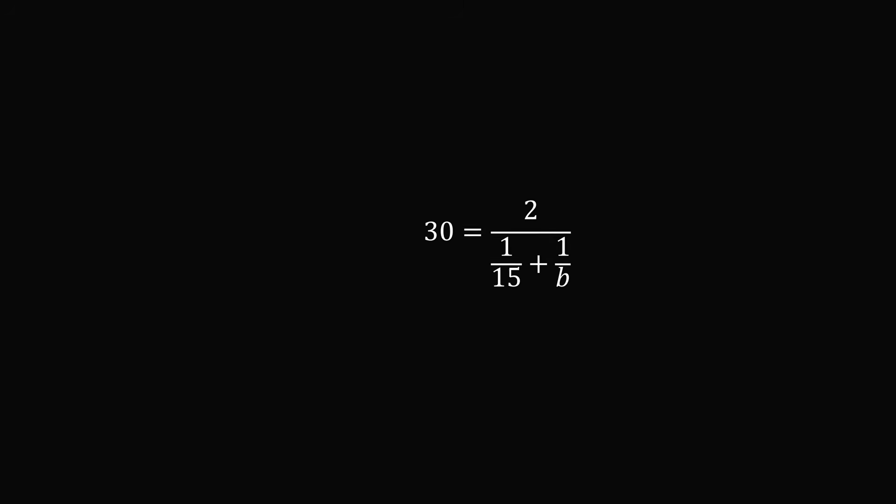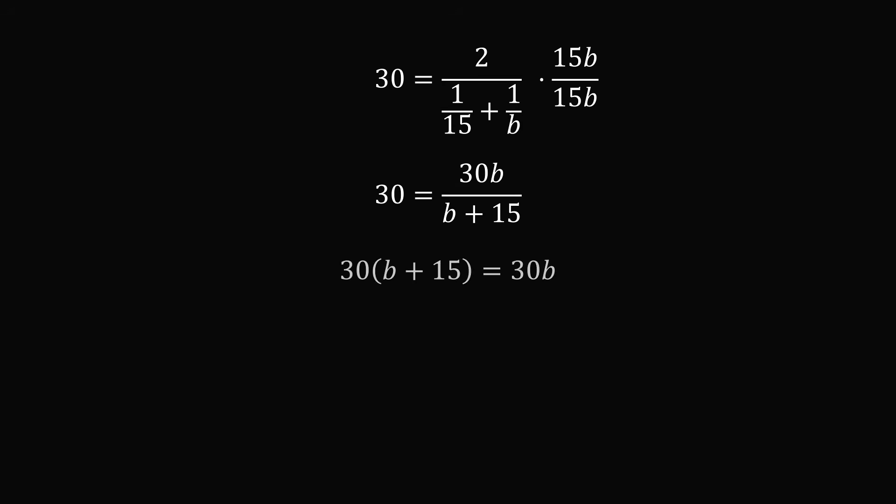So we have the equation 30 is equal to 2 divided by 1 over 15 plus 1 over b. Let's multiply the numerator and denominator by 15b to clear the fractions. This simplifies to be 30b divided by b plus 15. Multiply both sides by b plus 15. Distribute the 30. Now we have 30b plus 450 is equal to 30b. Subtracting 30b from both sides, we get 450 is equal to 0. Wait a minute, we've reached a contradiction. We can't solve for b.